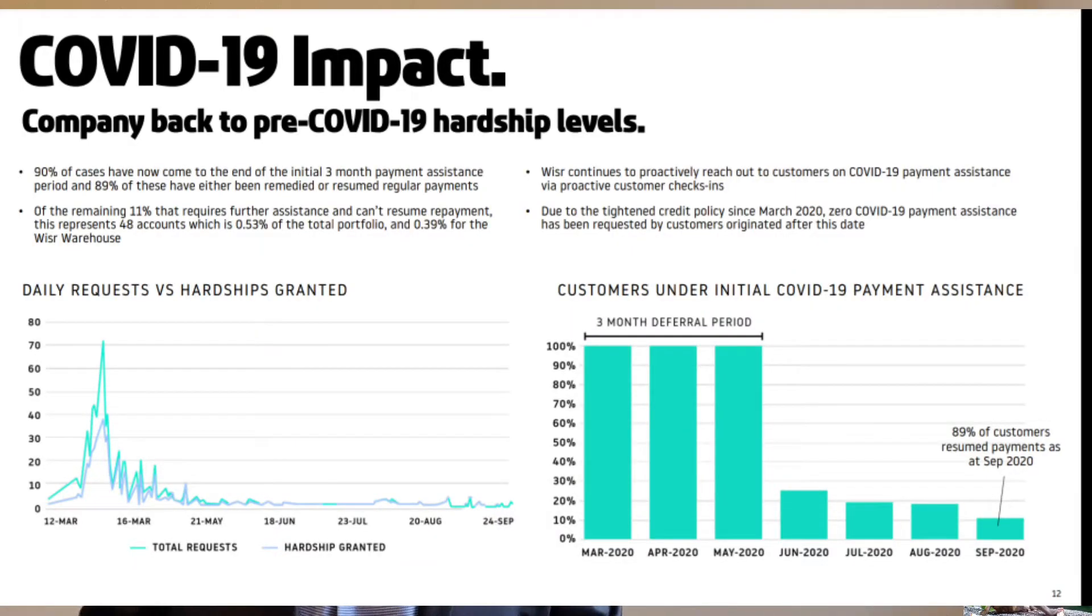The average customer credit score for Weiser is 714, which is a really good score. As of September 2020, 1.01% of their loans are classified as in arrears over 90 days late, on top of the 2.2% which are on the COVID-19 payment assistance. So that is a total of 3.21% in risky loans.